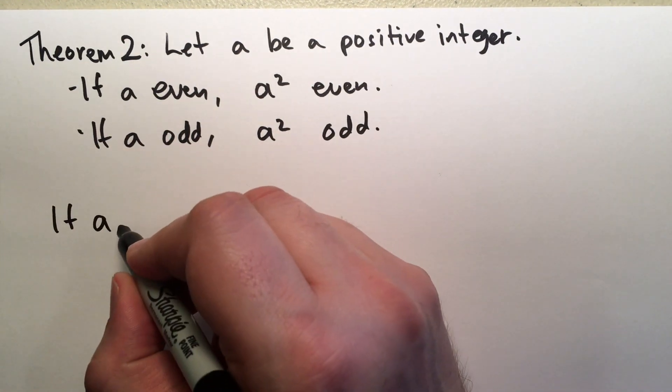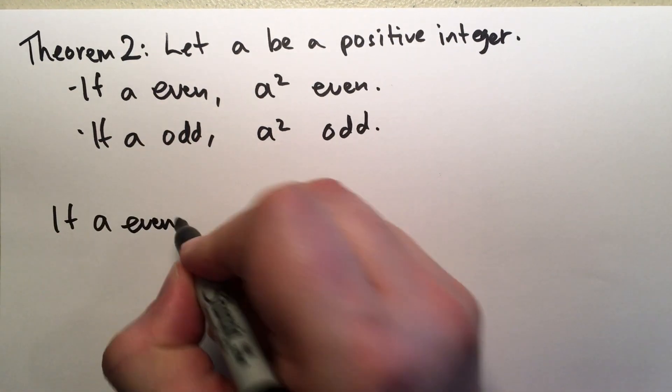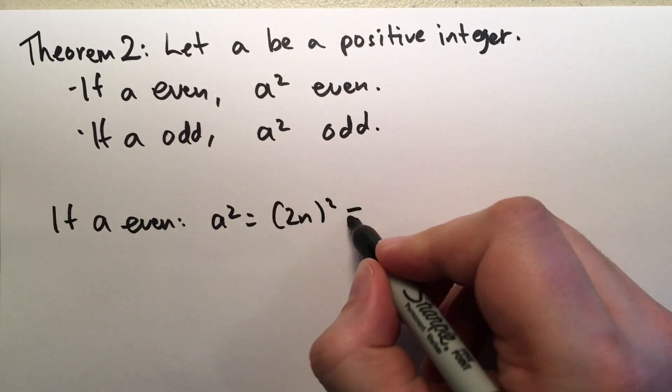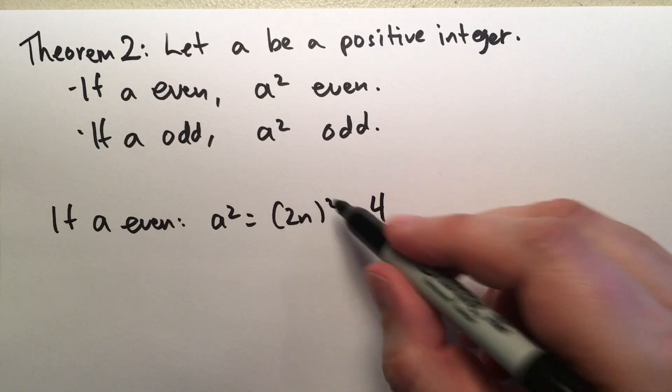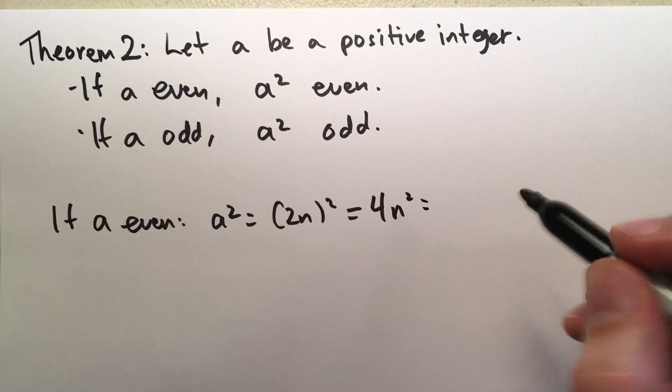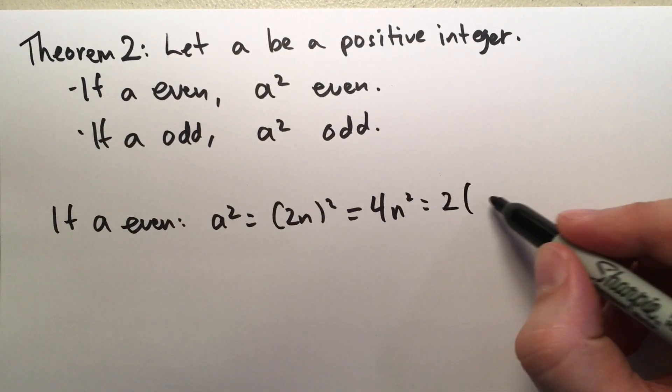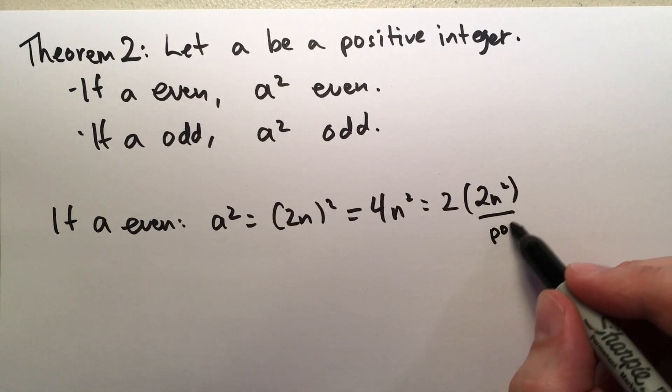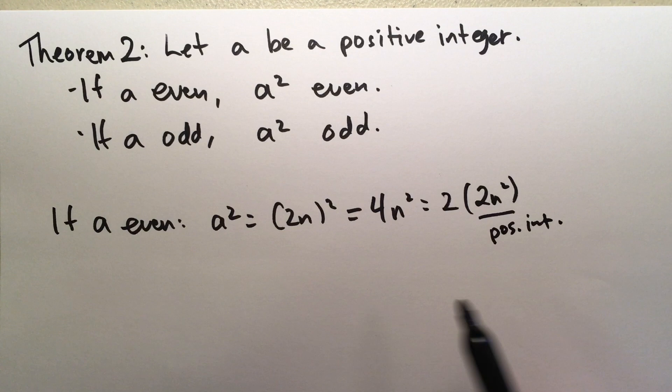So, if A is even, A squared is equal to 2N squared, which is equal to 4, that's 2 squared, times N squared, which is equal to 2 times 2N squared. And this is a positive integer. So, that's the definition of even, 2 times something.